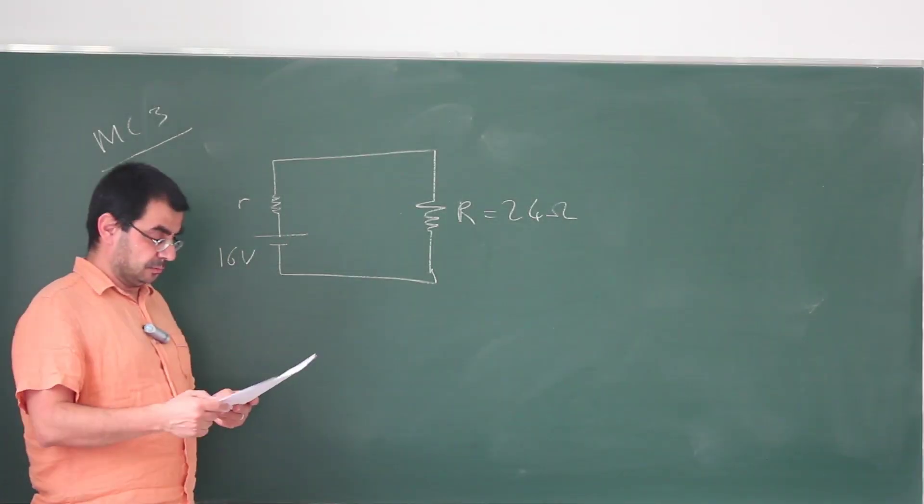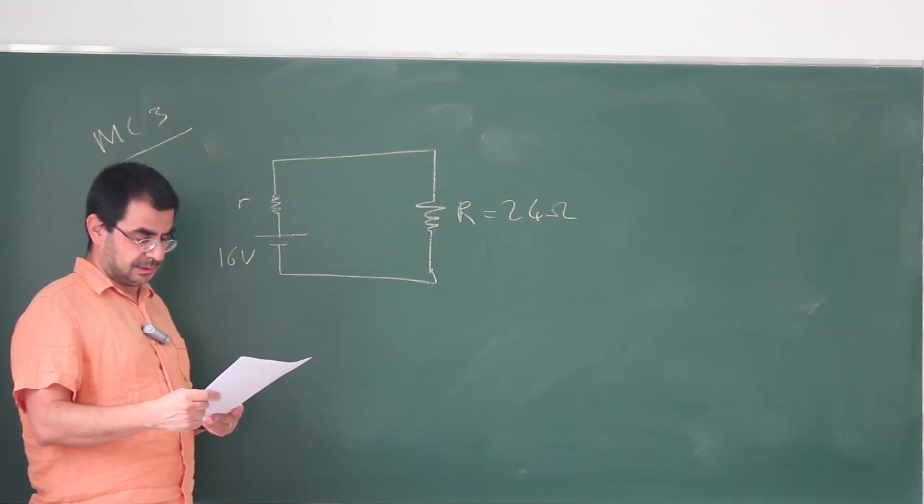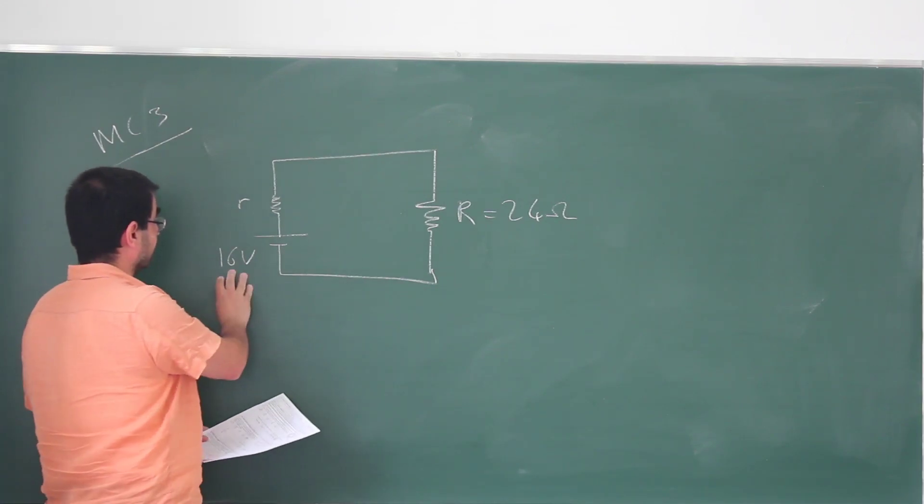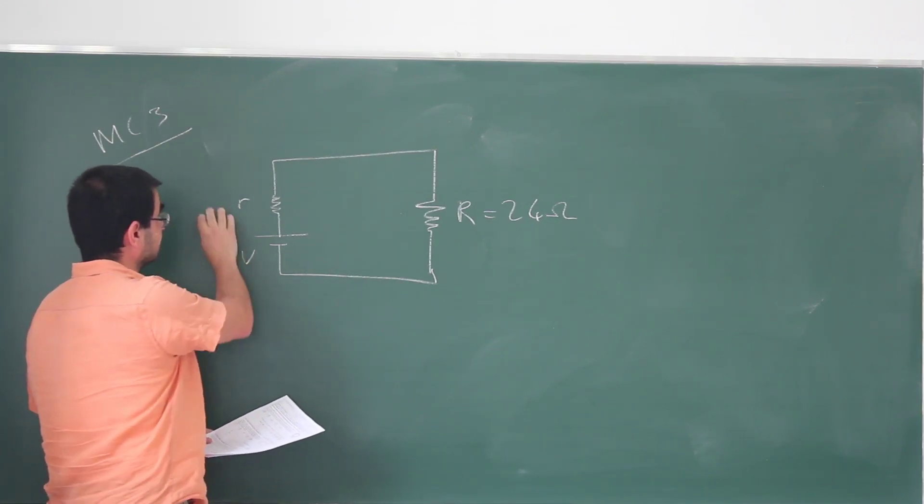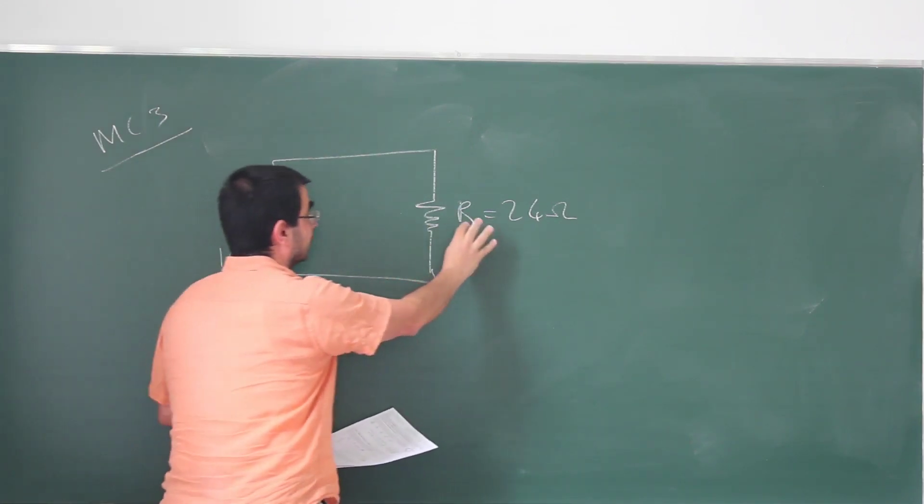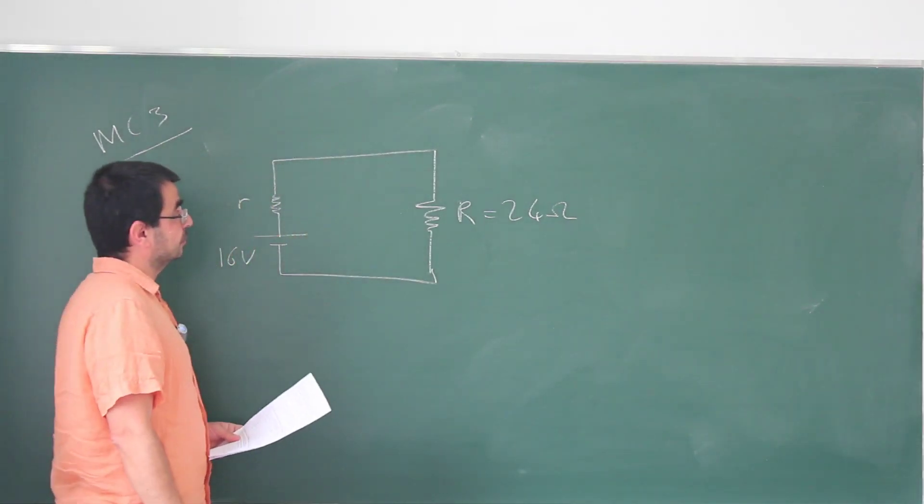For the third multiple choice problem in this exam, we are given the circuit. They have a battery with EMF 16 volts, some internal resistance small r, and it's connected in series to a resistance of 24 ohms.